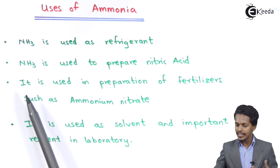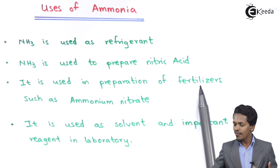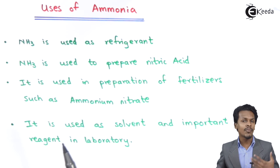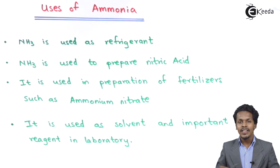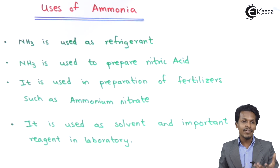It is used in the preparation of fertilizers such as ammonium nitrate and ammonium sulfate. These fertilizers are used on farms to cultivate different crops.